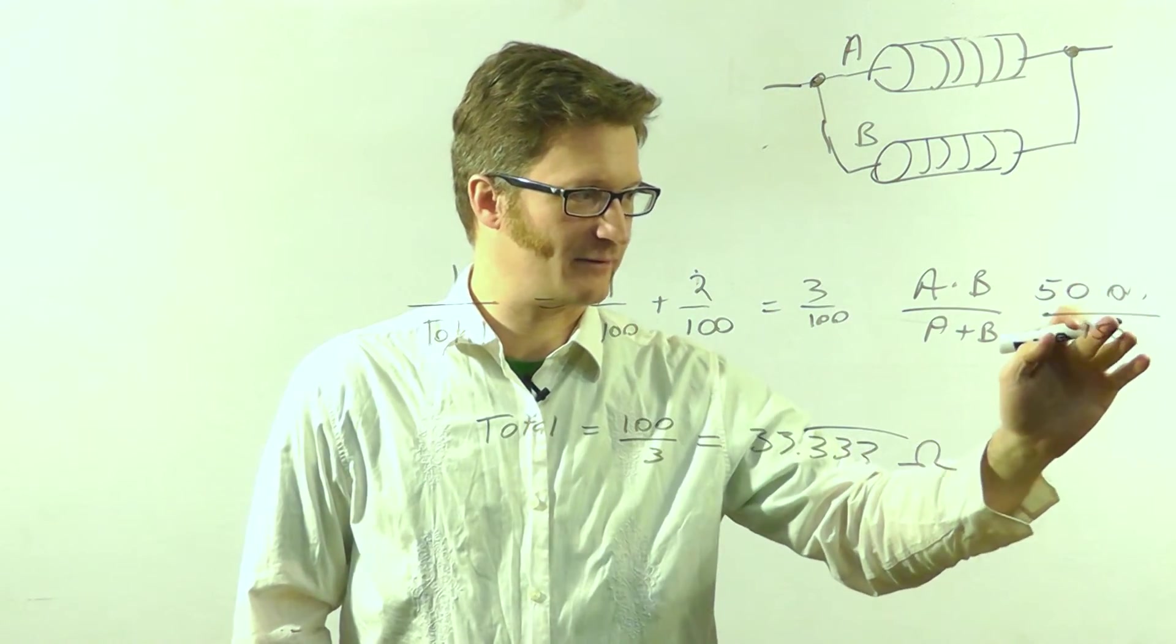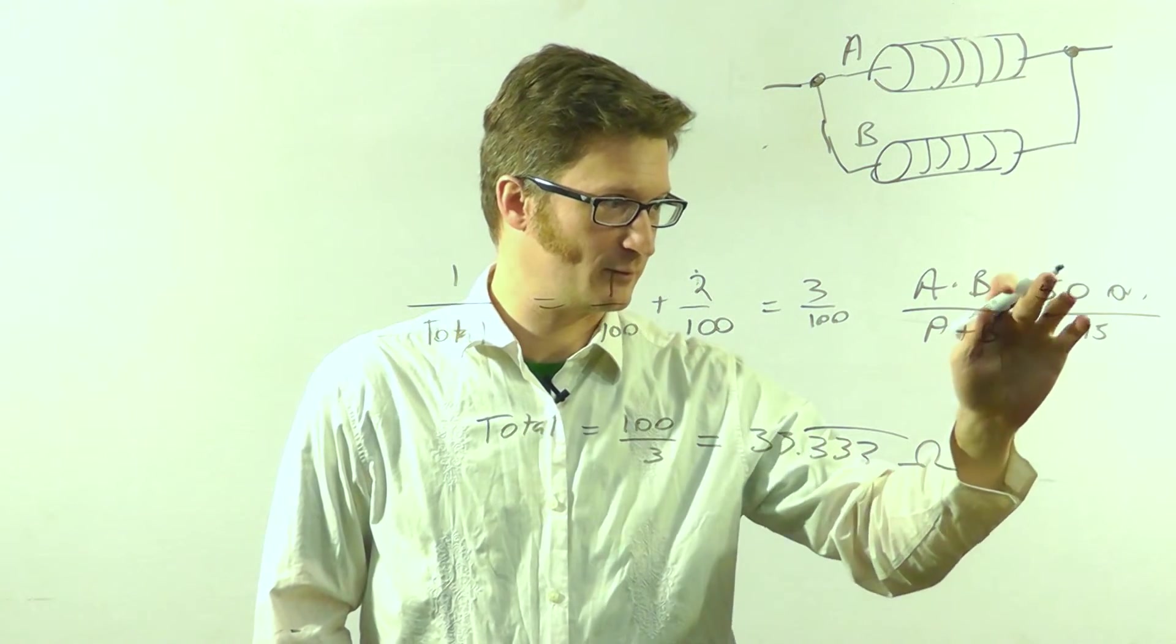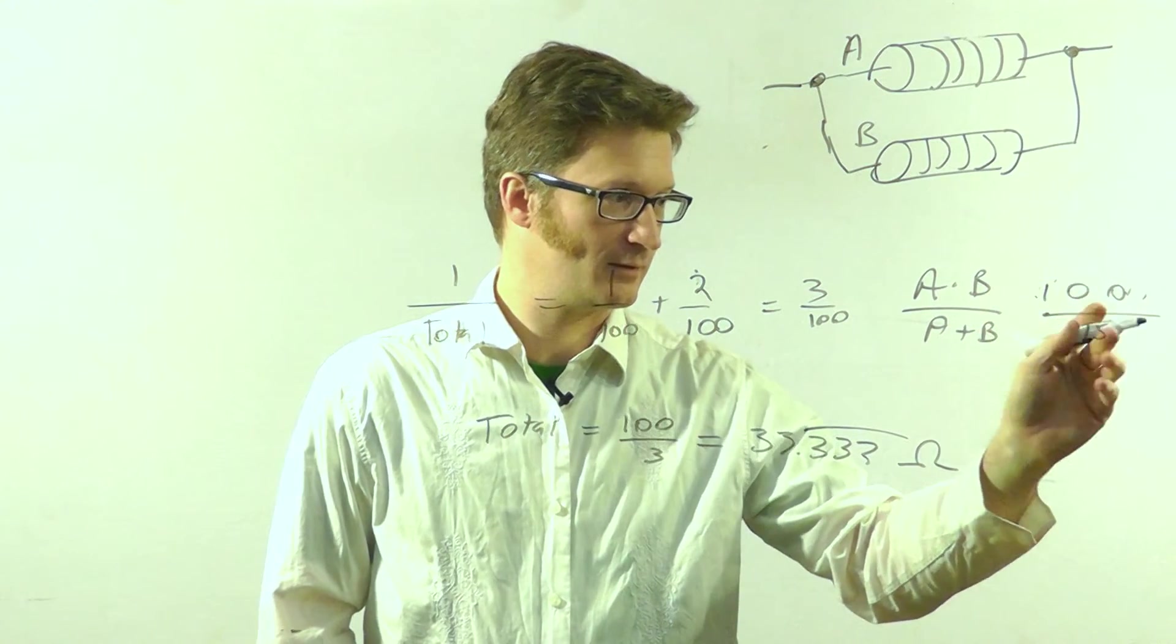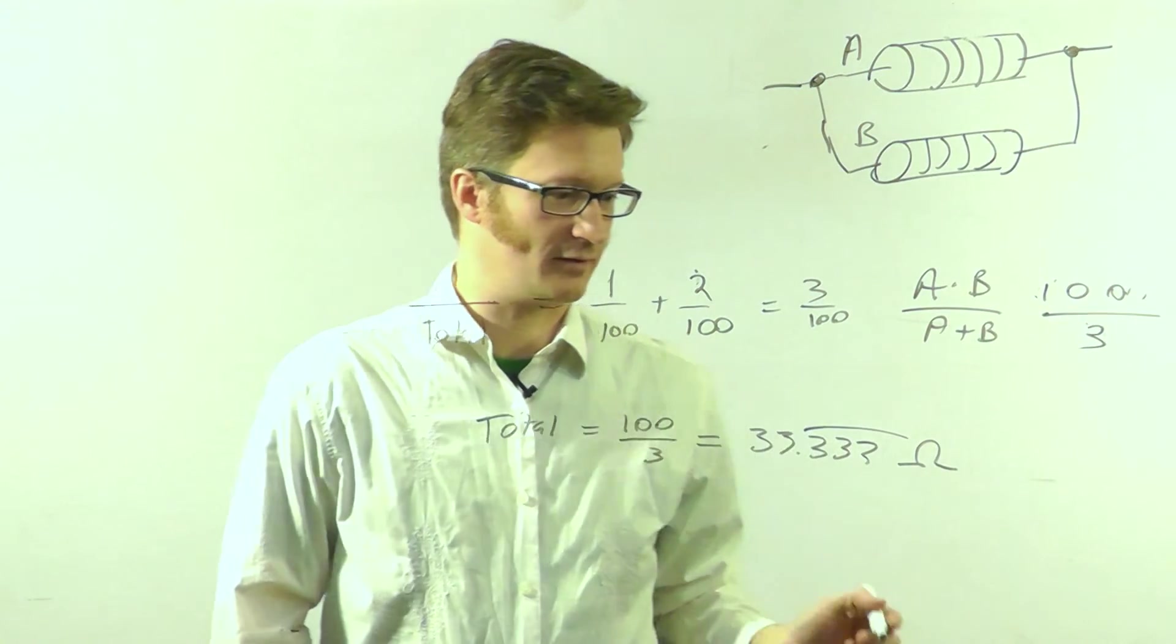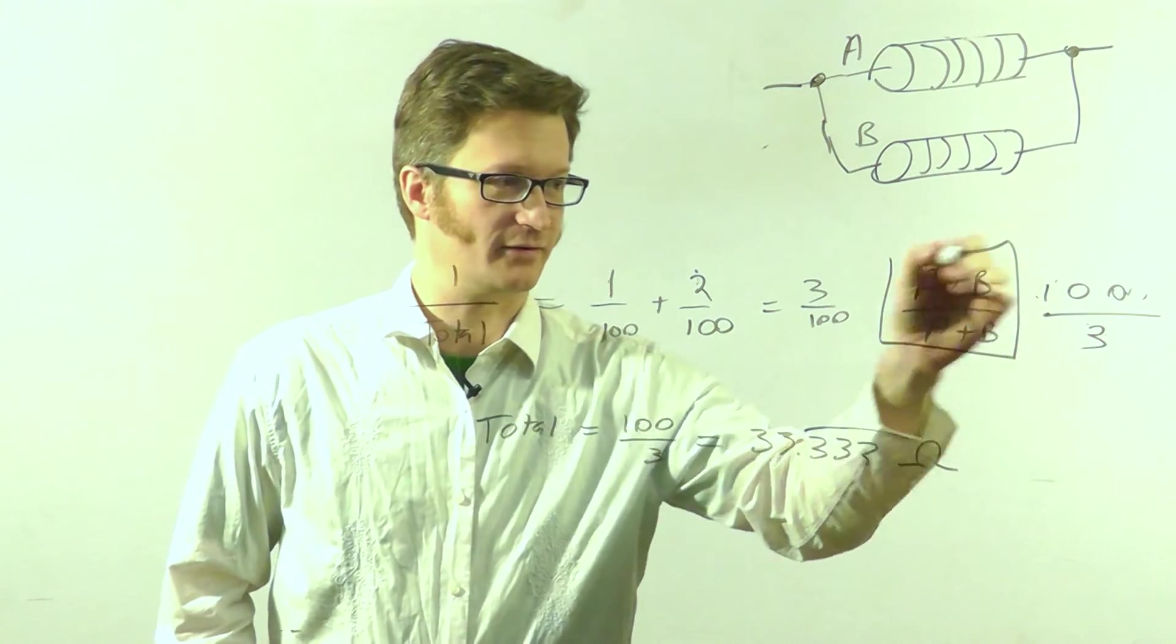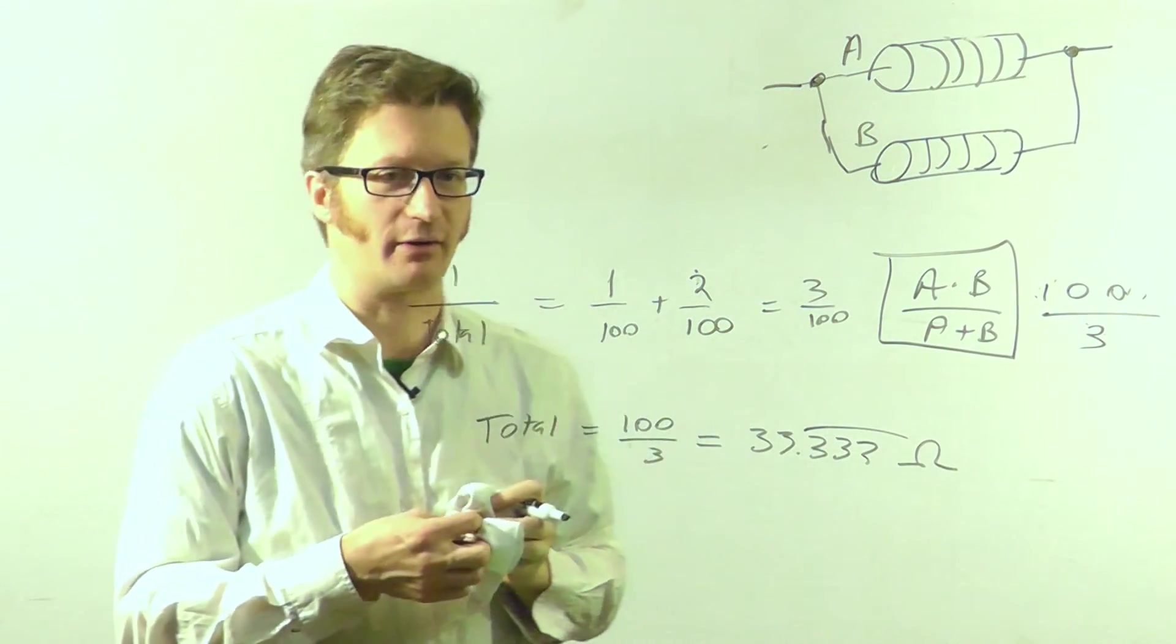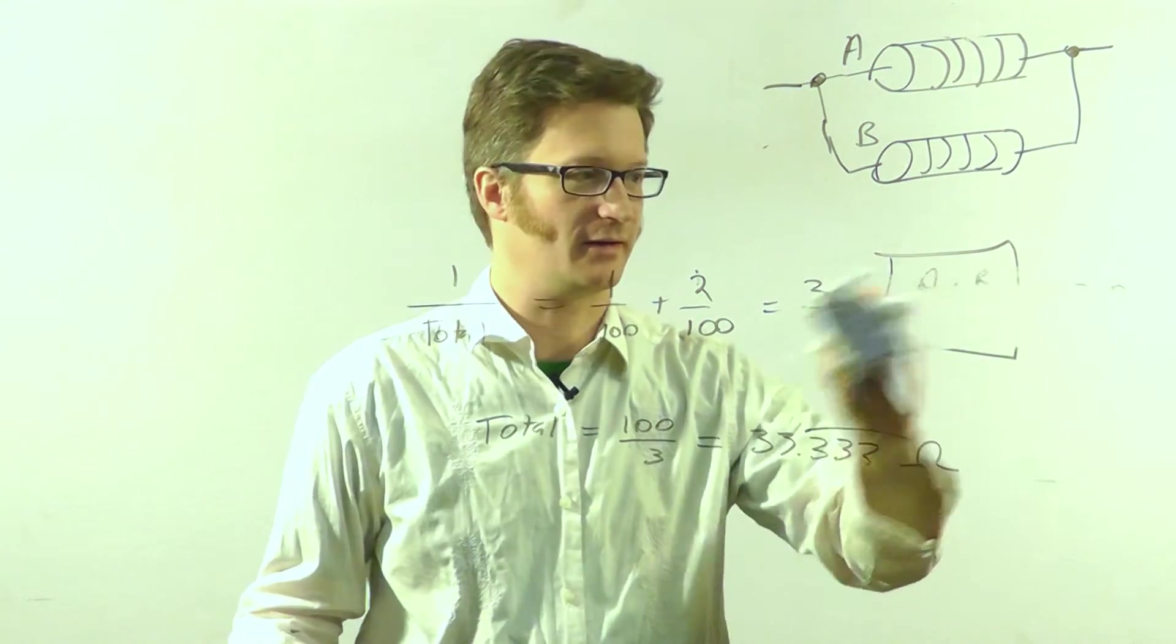5,000 over A plus B is 150. Divide that out. 500 fifteenths, which is 100 thirds. So there we go. That's another way. For two resistors, you can get to a quicker answer if you don't like doing it the other way.